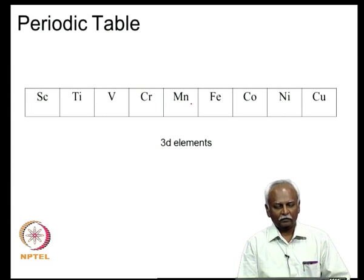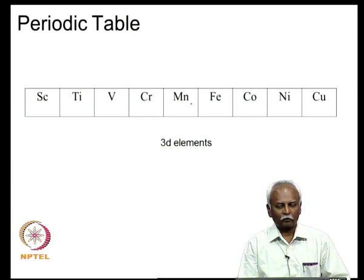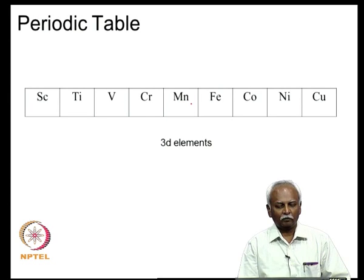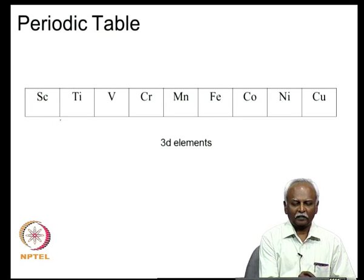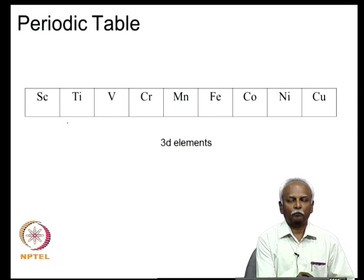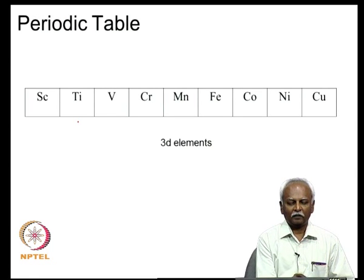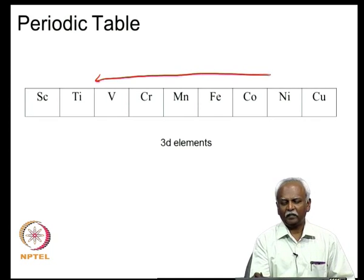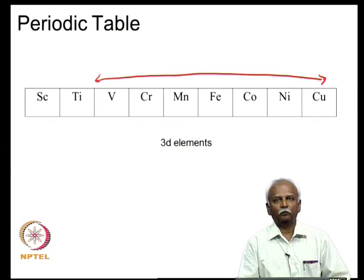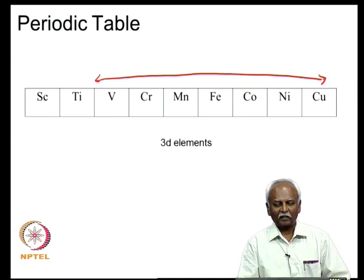If you look at the first representative row of the transition metals, going from scandium to zinc, we will consider only the elements that form good carbon monoxide complexes — those in the range from vanadium to copper. From vanadium to copper, you do have frequent occurrence of carbon monoxide complexes, and we will see in a moment why this is the case.